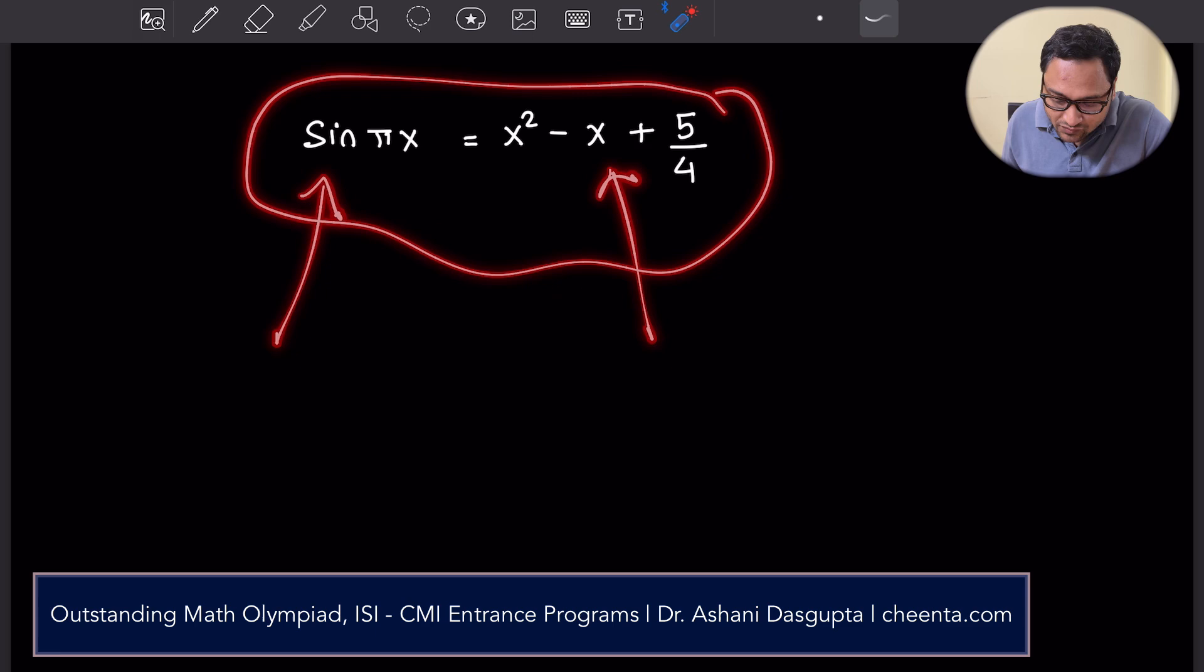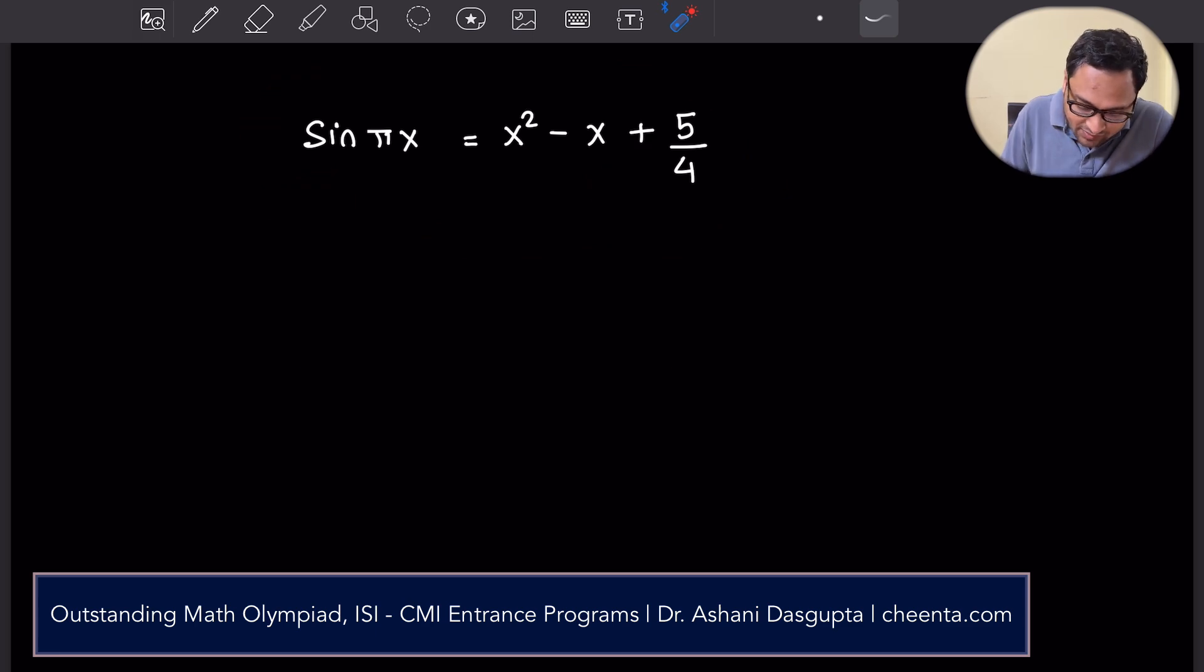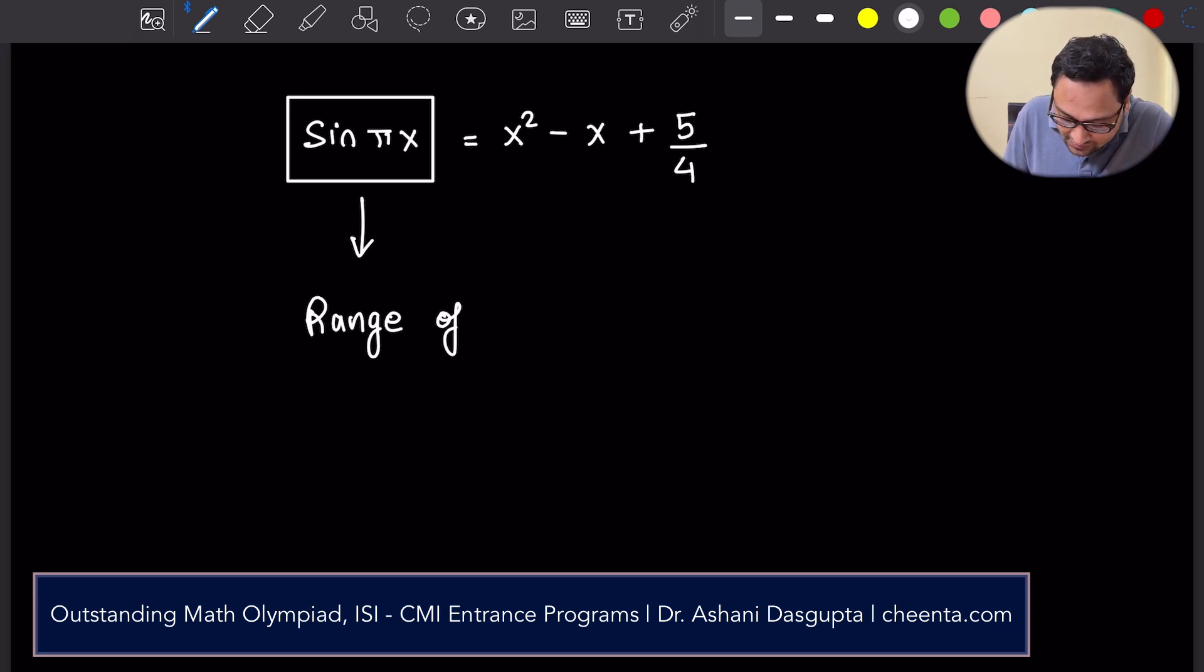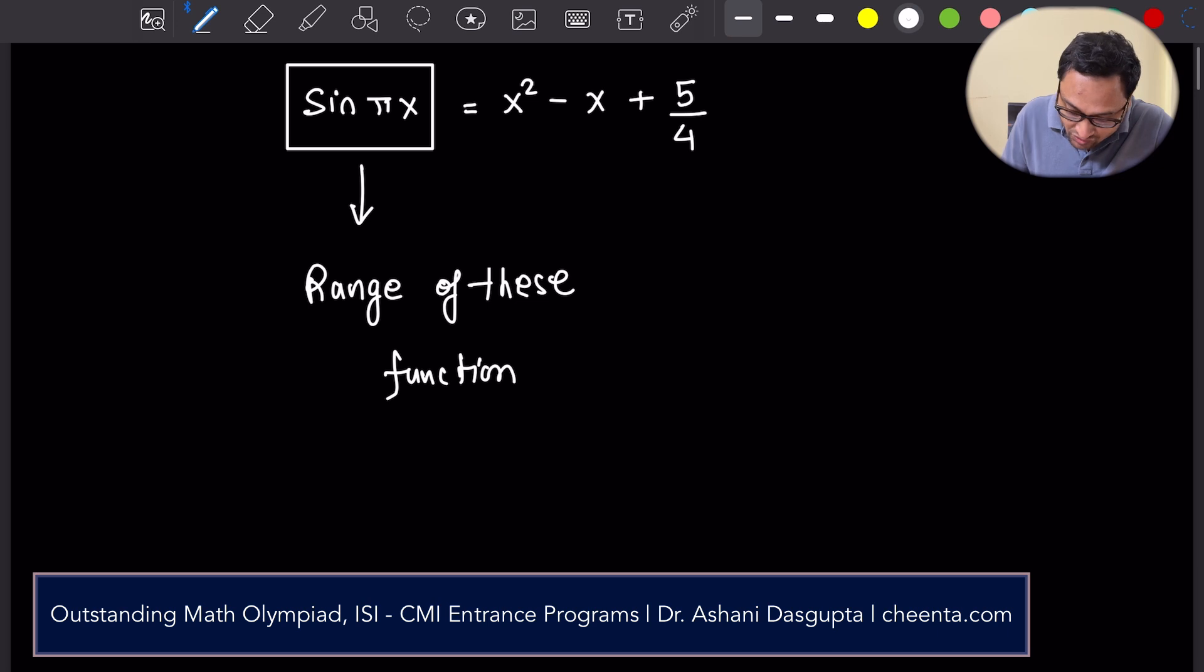The way you go about these problems is that you look at the range, the range of these functions. What is the meaning of range? Range means the values that this function can take up. Sine of anything is always between minus 1 and plus 1. That's the property of the sine function.